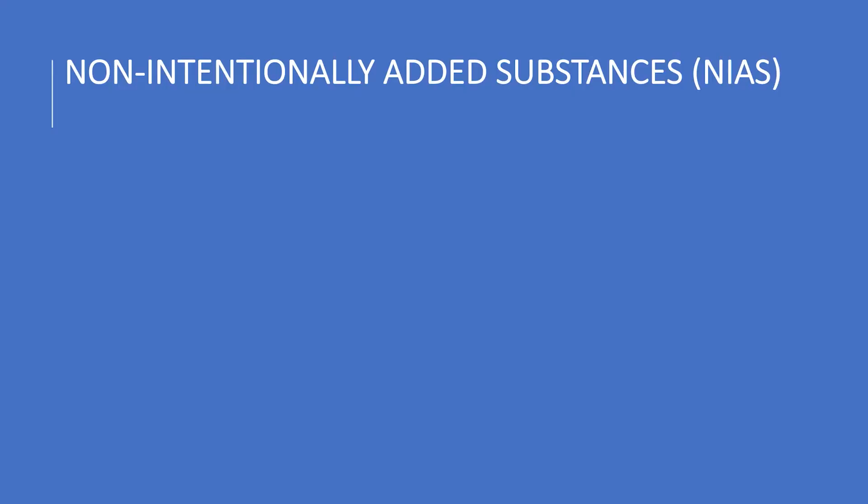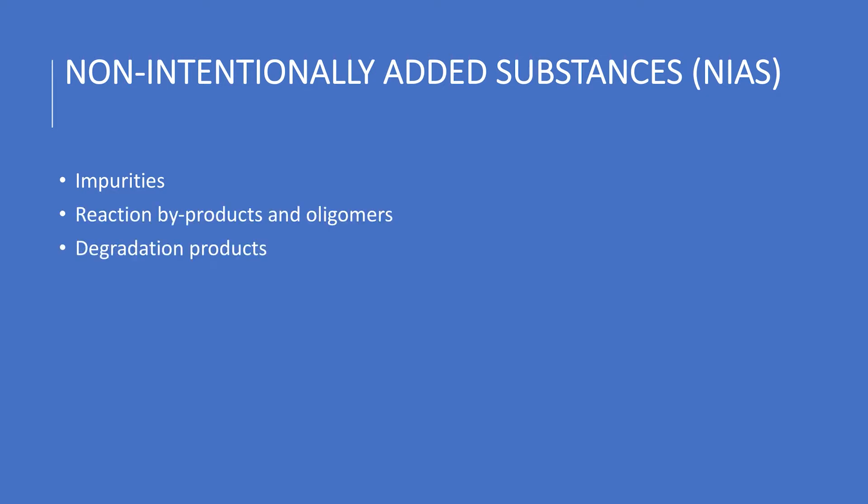But in addition to the chemicals that are intentionally added to food contact materials and articles, there are also the non-intentionally added substances present in the finished food packaging — the so-called NIAS. NIAS can be impurities of the intentionally added substances, as well as reaction byproducts or degradation products of additives. There can also be contaminants present because the material has been recycled from a previous use.